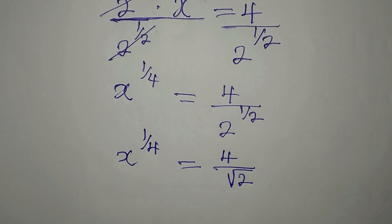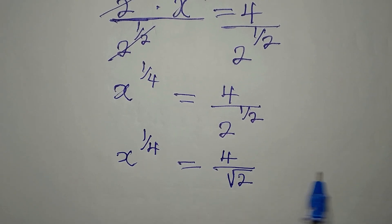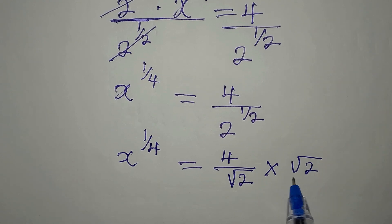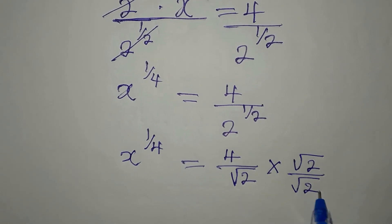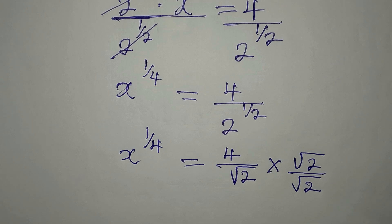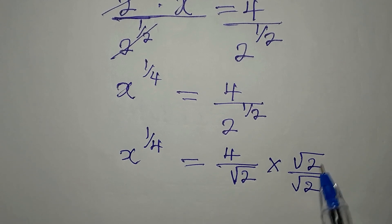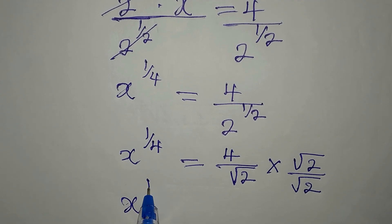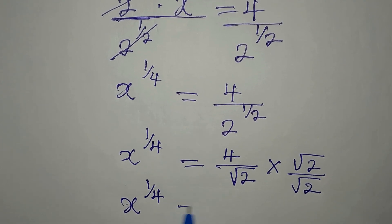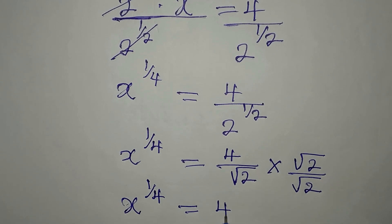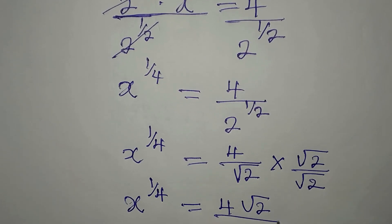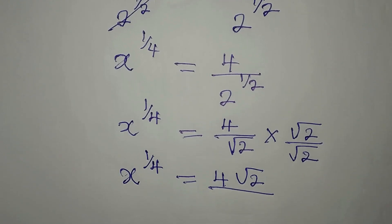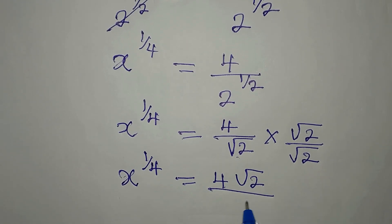Hope you know that. And if this is what it is, we are to rationalize what we have here. To rationalize it, this non-rational number here, you multiply it, multiply the numerator and the denominator by it, just like I did. So x to the power of 1 over 4 is now 4 times root 2 is 4 root 2 over root 2 times root 2 will give 2.